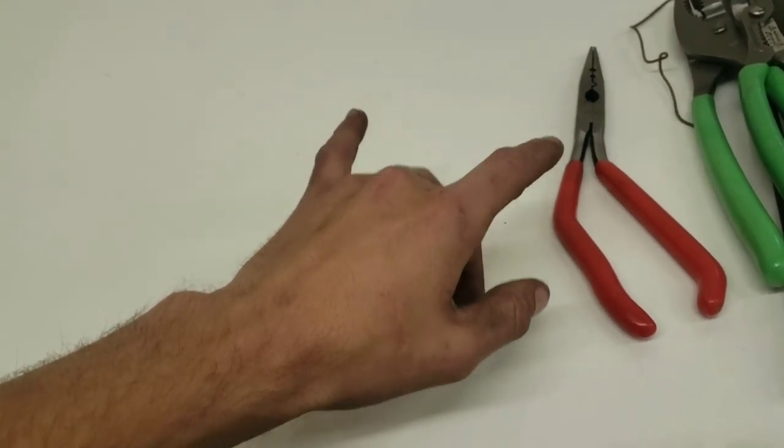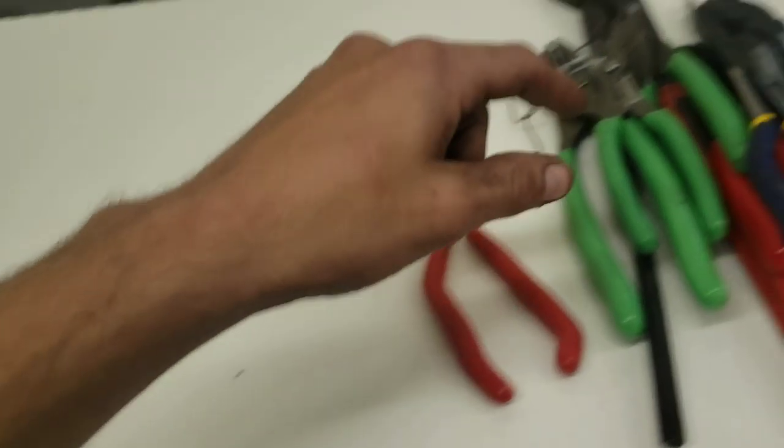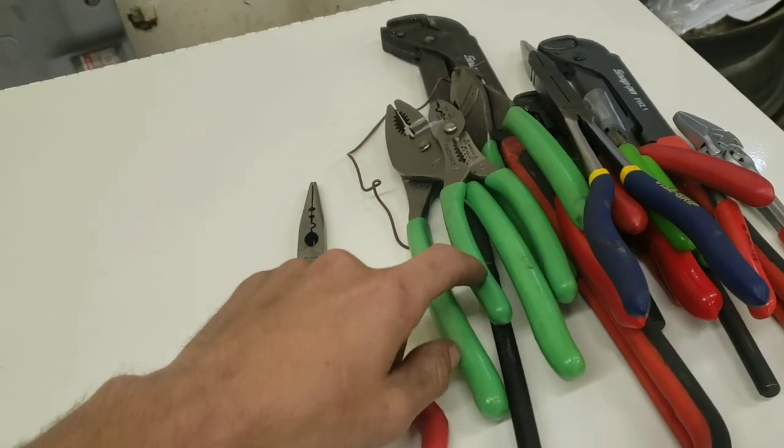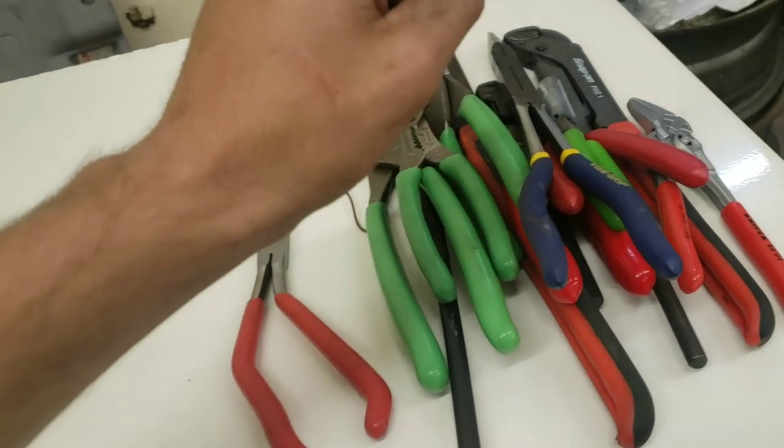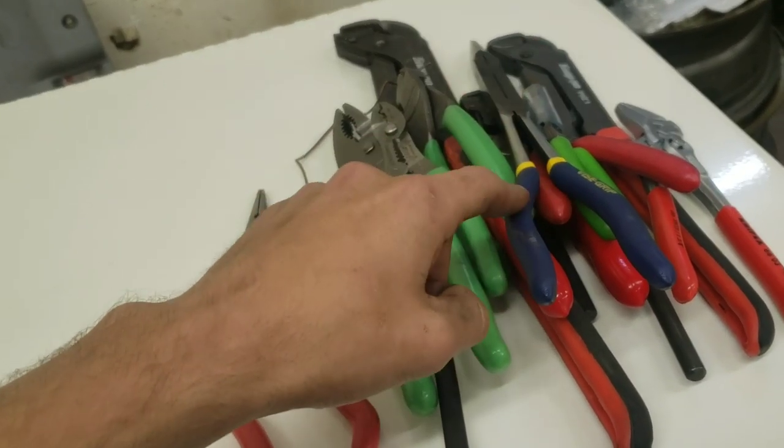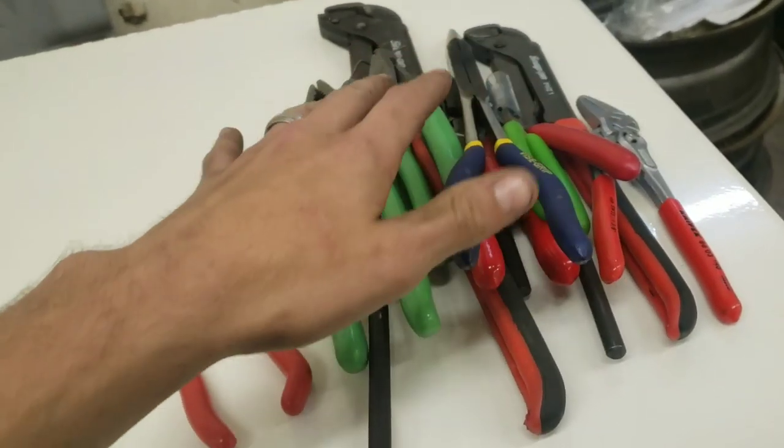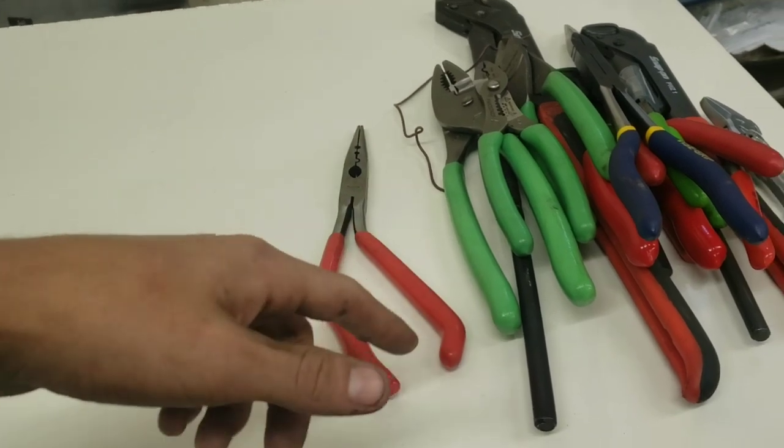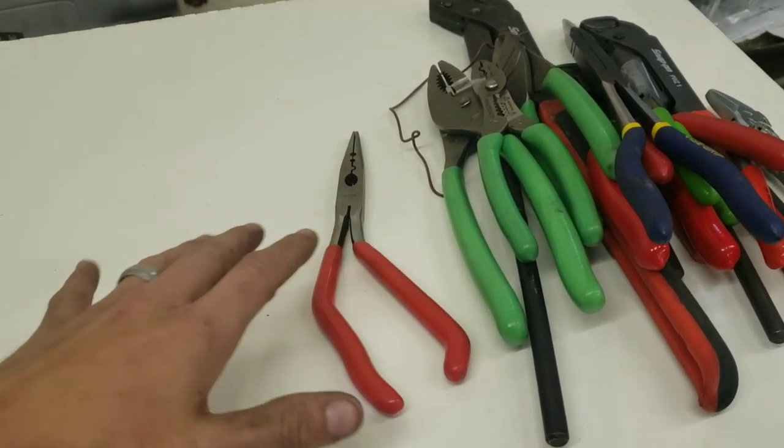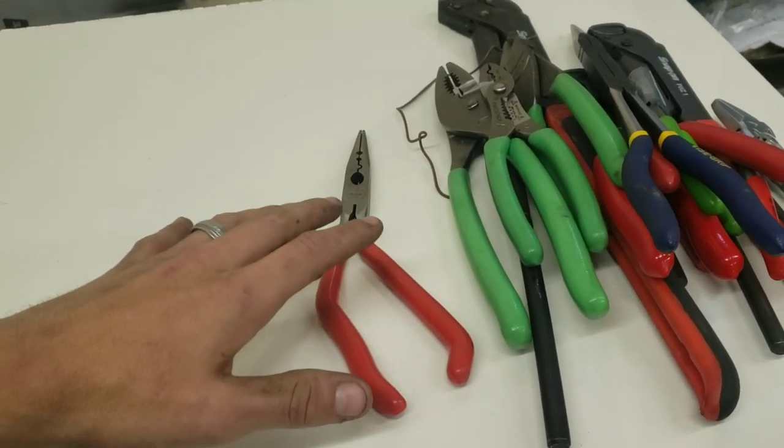As always, like, comment, share, subscribe. Please leave comments if you know any other company with the same grip as Snap-on, and where Irwin Vice Grip pliers are made. Let me know your top 10 pliers or favorites you use. If you have different brands you want me to try, leave those below.